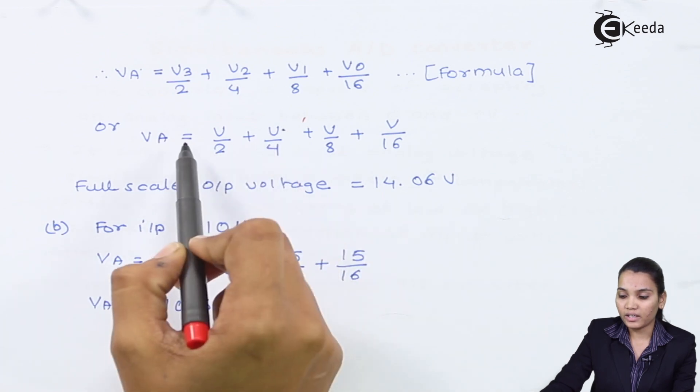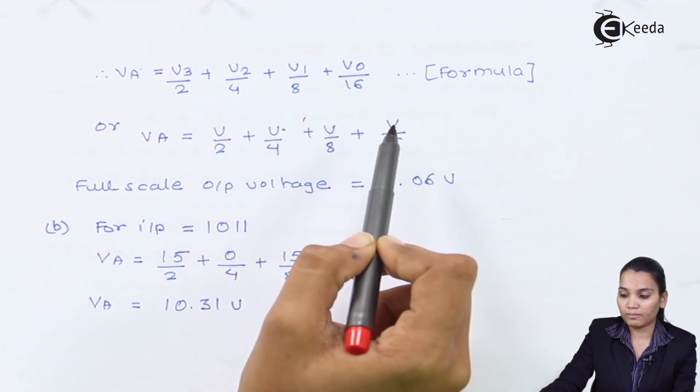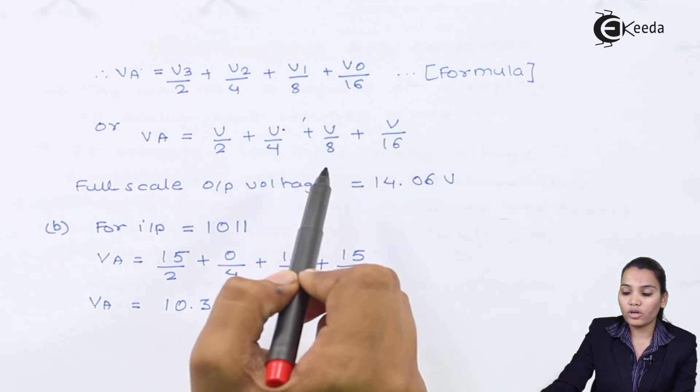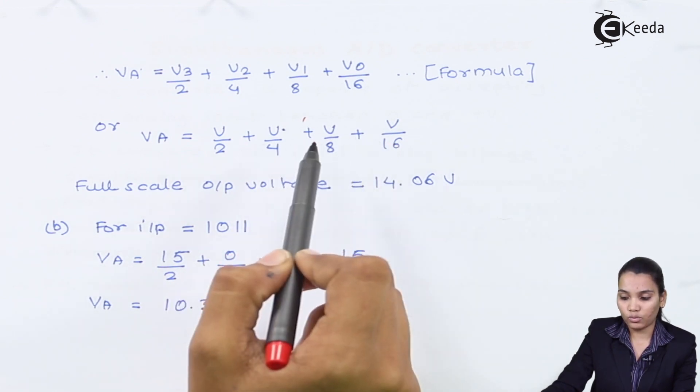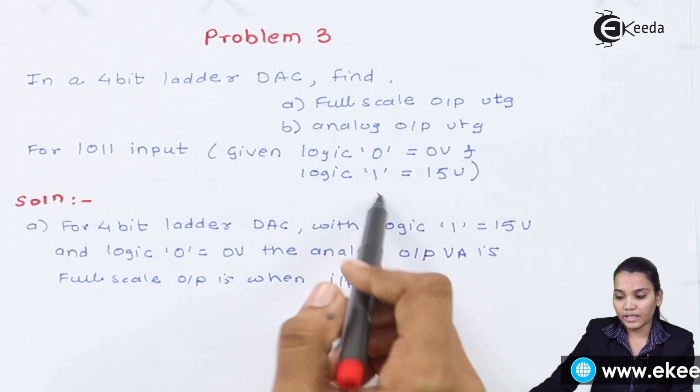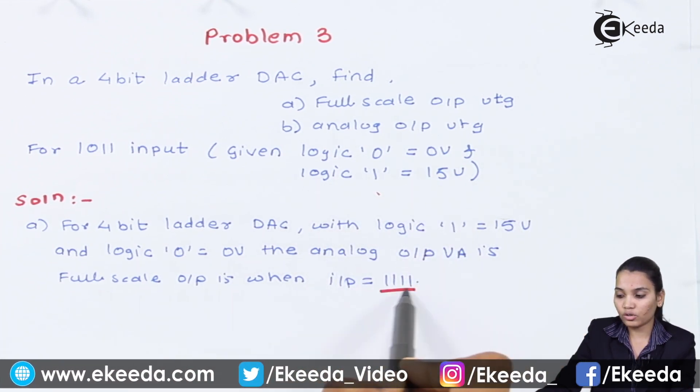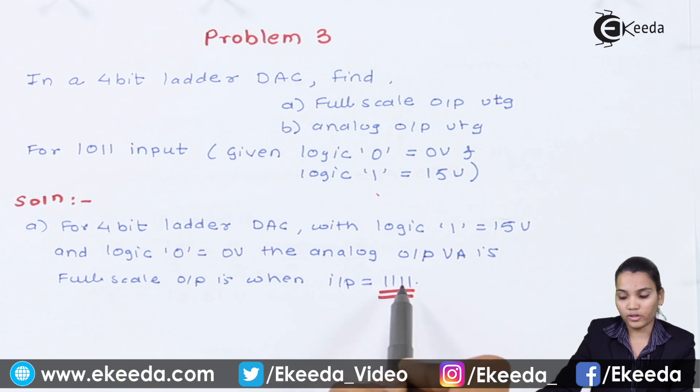Now we will write VA = V/2 + V/4 + V/8 + V/16. Now we all know that by calculating the output voltage, the higher value V is nothing but 15 volts. That is given in the question. For example, logic 1 represents 15 volts and we have to find out the full scale voltage for logic 1 only, that is each bit is logic 1.